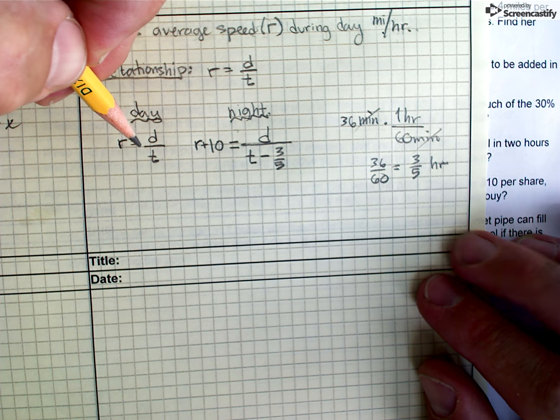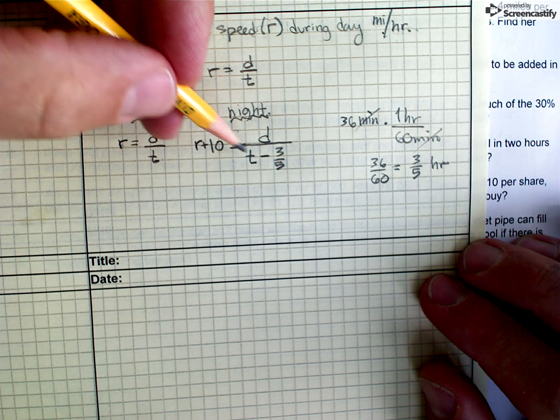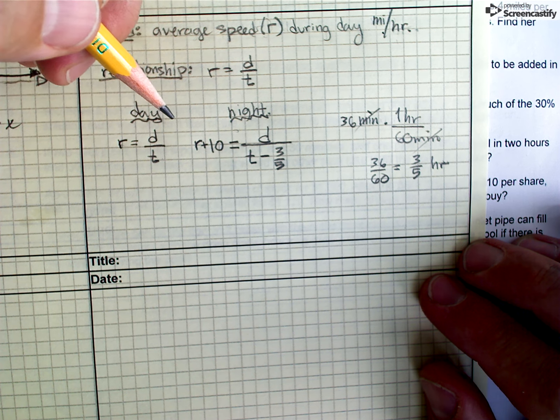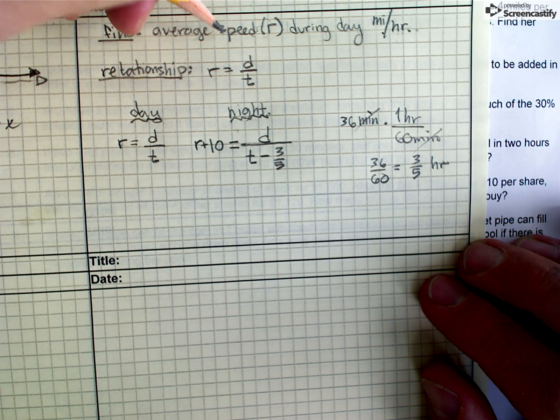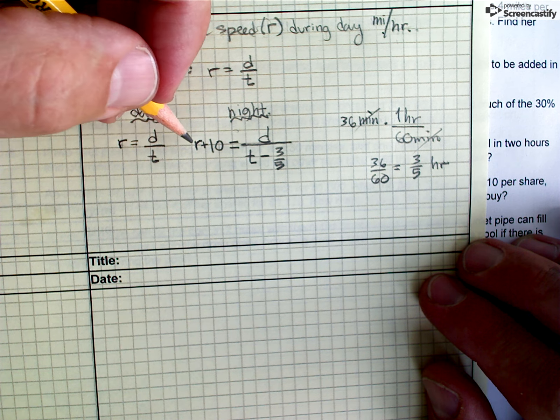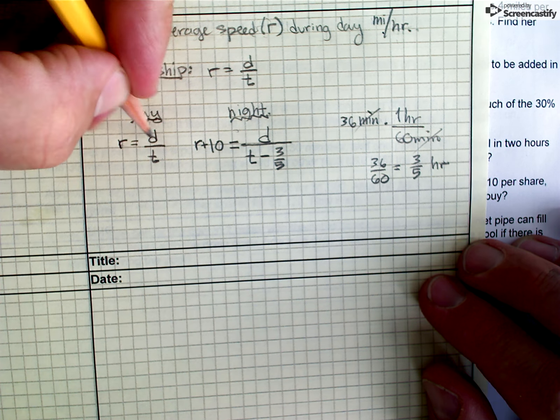So now I have two equations and two unknowns, R and T. Remember, D is 120 miles. So I'd like to eliminate the T because in this problem, I'm actually looking for R. That's the thing I'm trying to find. So I don't want to eliminate that from my equation.